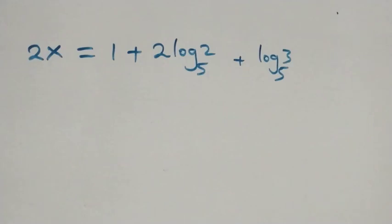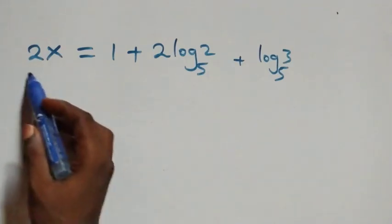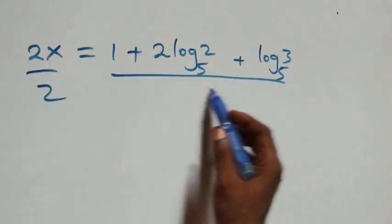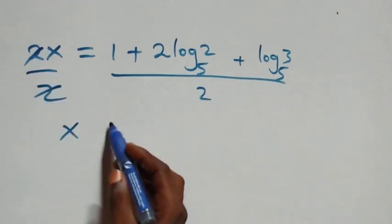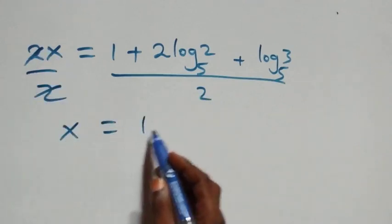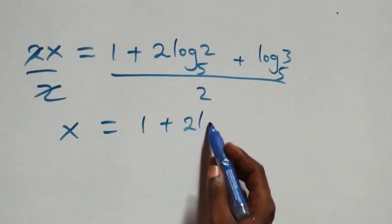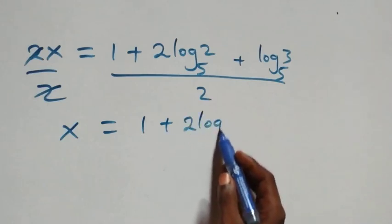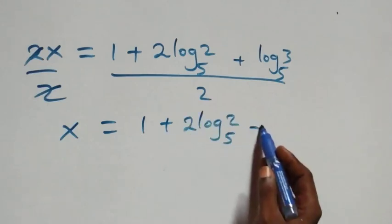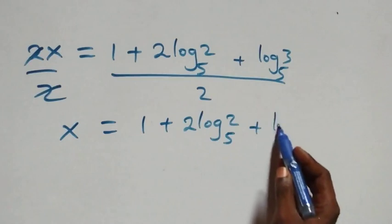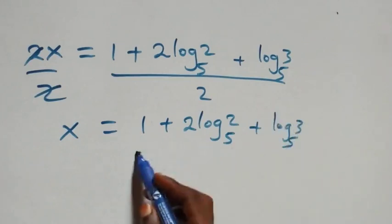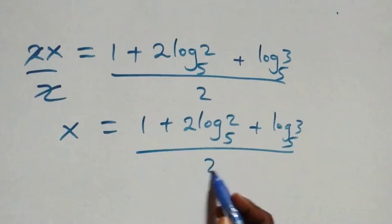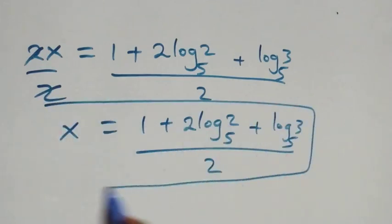We divide both sides by 2. The 2s cancel on the left, and we have x equals 1 plus 2 log₅2 plus log₅3, all over 2. So this is the value of x for this given problem.